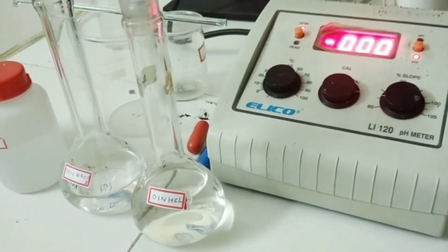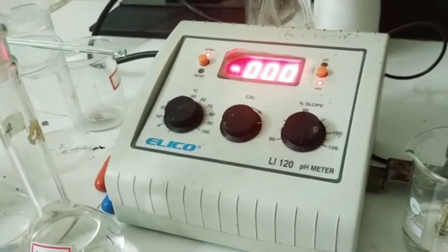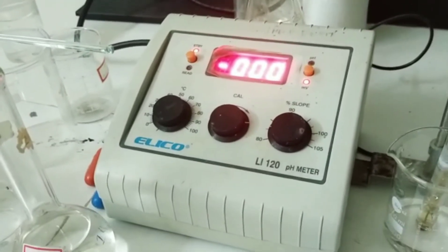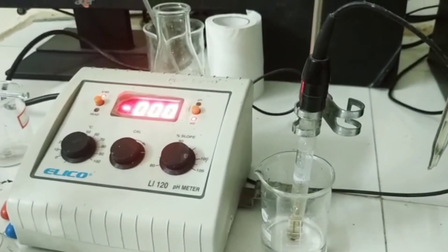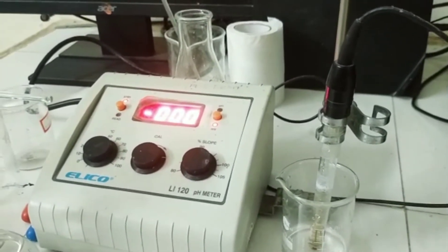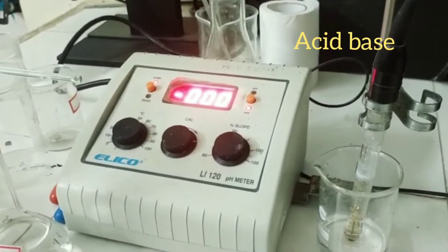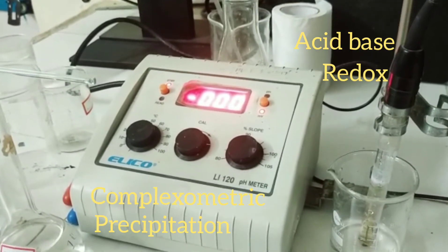Before starting the potentiometric titration, let me give you a brief idea about significance of potentiometric titrations. Titrations are basically laboratory methods to analyze the amount of analyte present in the given sample. There are different types of titrations based on the nature of the analyte like acid-base titrations, redox titrations, complexometric titrations, precipitation titrations, etc.